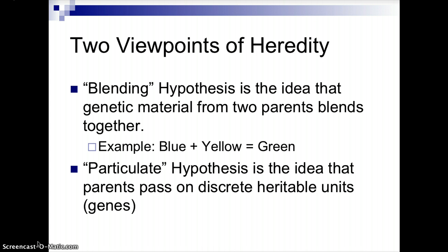Through Mendel's studies, he came up with the particulate hypothesis. In this particulate hypothesis, it gave the idea that parents pass on discrete, inheritable units. When we talk about that particulate type thing, you think of a particulate as some type of piece of matter — and that, of course, would be the genes. So Mendel gave this idea that it's not the blending hypothesis; it's these genes or particles that are being passed on from parents to their offspring to give the offspring these unique characteristics.